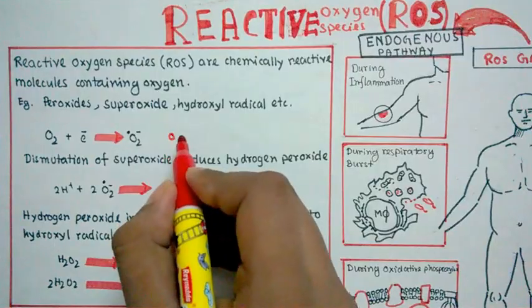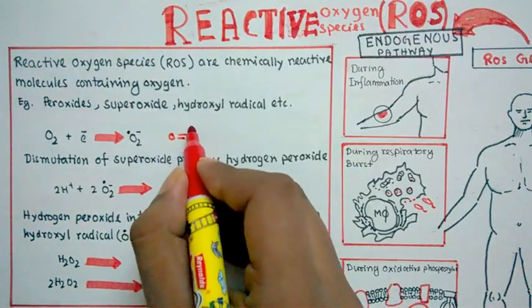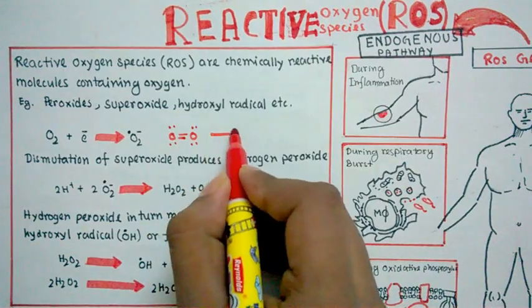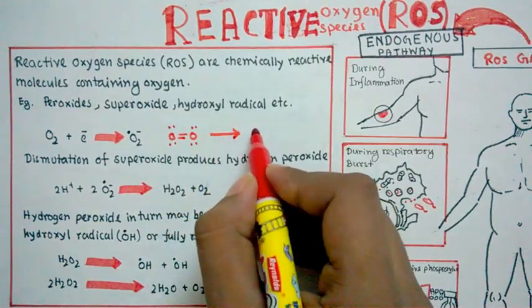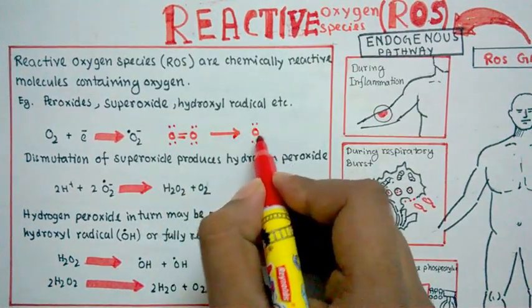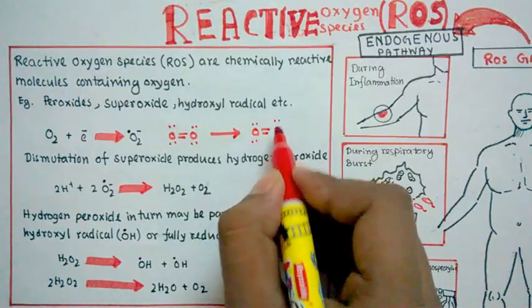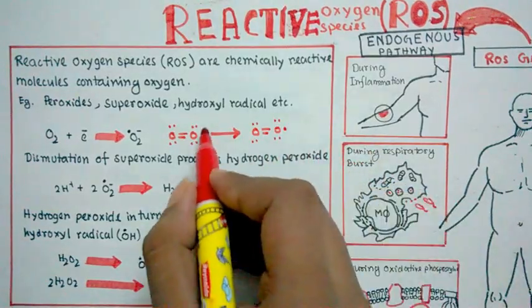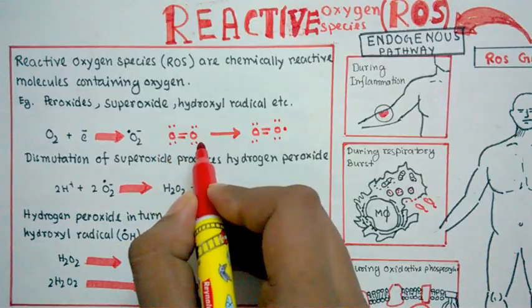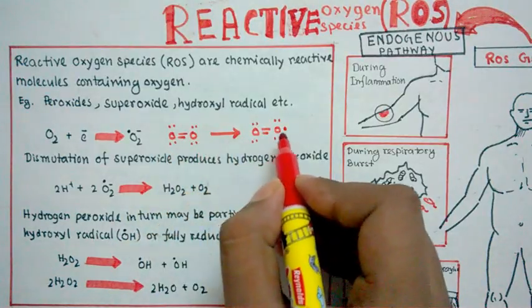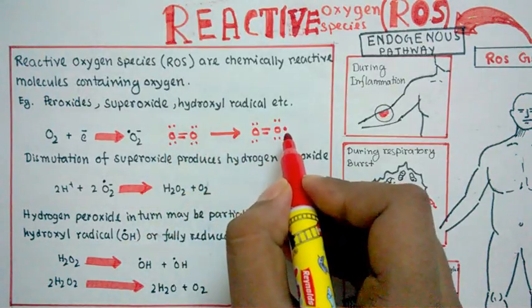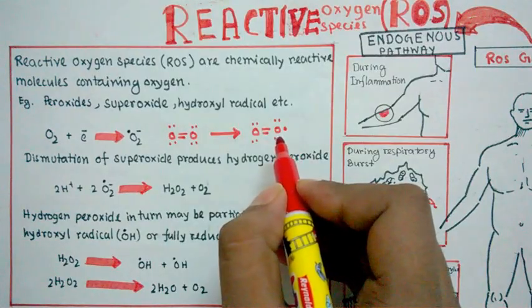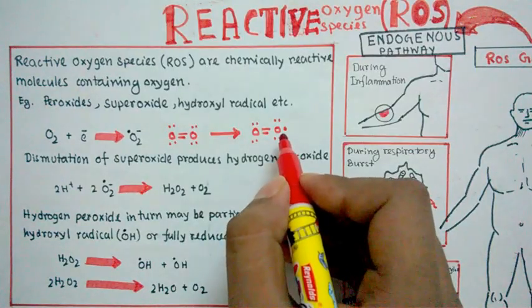This is the basic structure of the oxygen molecule, and after reduction it would gain one electron and form a reactive oxygen species. As you can see, this is the stable structure of the oxygen molecule, but when it gains an extra electron it is unstable.